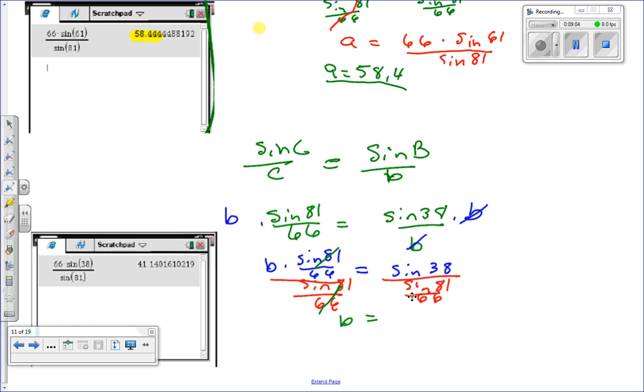So you get 66. Sorry, that's a 6. Oh, man, that's a bad 6. So let's just try that again. You're going to get 66 times the sine of 38, all divided by sine of 81. So you type that in the calculator. Voila. You get B is equal to 41.1, and that's your length. So that's my answer.